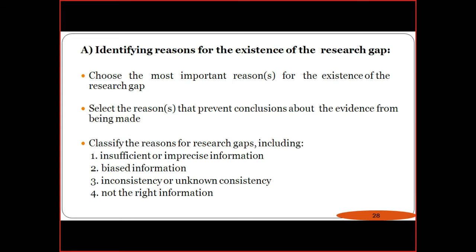The second important part is regarding classification of the research gap, including insufficient or imprecise information. Sometimes the data required to complete the task is unavailable or incomplete — some data is missing. In such cases, it will definitely affect the results. The four issues are: biased information, inconsistency or unknown consistency, and not the right information. Whatever data is required for the research depends upon its availability to finalize the research gaps.